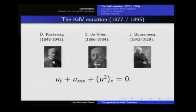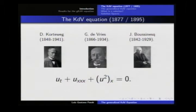We're going to start first with the KdV equation. The KdV equation is this very famous equation in fluid mechanics, and it was derived by Korteweg and De Vries in 1895. I also put a picture of Boussinesq here because there is an interesting historical remark: actually, Boussinesq first derived this equation some 20 years before Korteweg and De Vries,